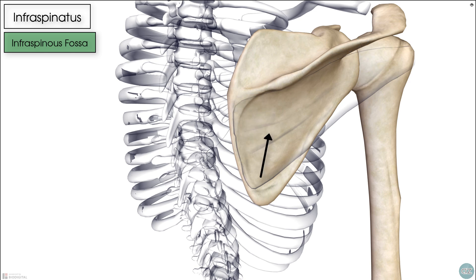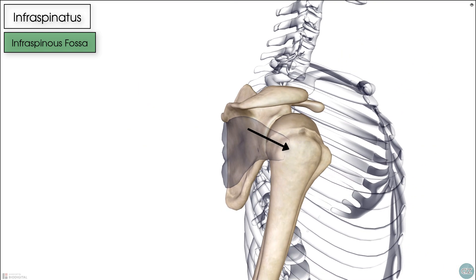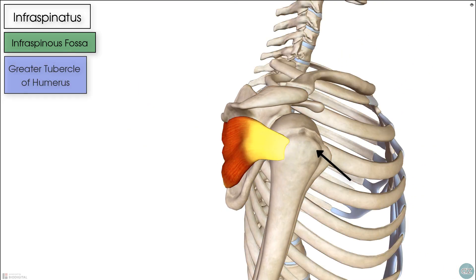From its origin, the infraspinatus then traverses the lateral border of the scapula and moves around the posterior aspect of the proximal humerus to insert on the greater tubercle, which is on the lateral aspect of our proximal humerus. There are three facets on the greater tubercle, and the infraspinatus attaches to the middle facet, with the supraspinatus attaching to the superior facet and the teres minor inserting on the inferior facet. This is remembered with the acronym SIT.